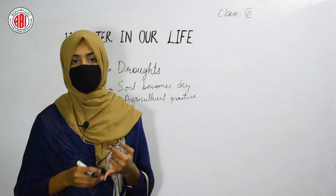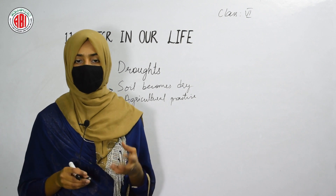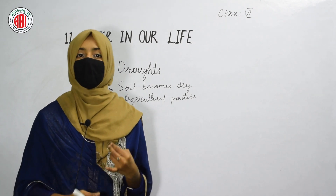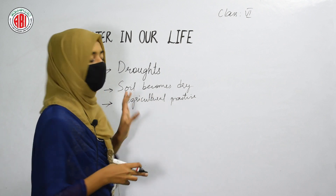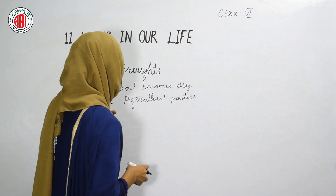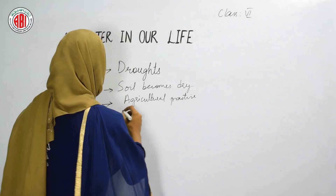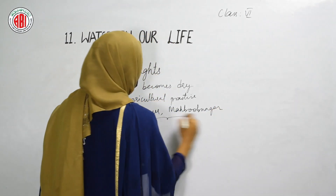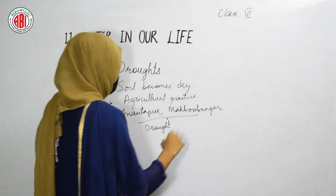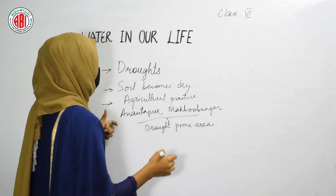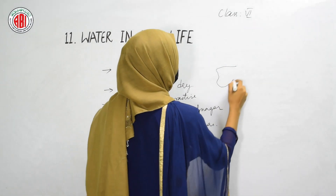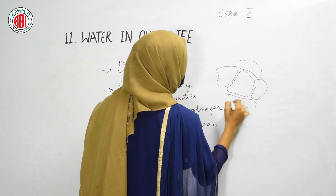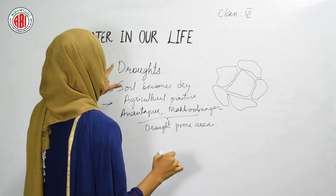If we cannot do any agricultural practices on that land, we cannot grow any plants, and so we cannot get any food. In such areas, we cannot get a proper amount of food or even a proper amount of water. Those types of areas are called drought-prone areas. In our state, Anantapur and Mahbubnagar are two districts considered drought-prone areas. If the soil becomes dry and develops cracks due to unavailability of water, and the land becomes waste where we cannot grow any crops, that condition is called drought.